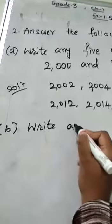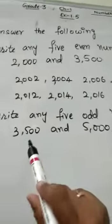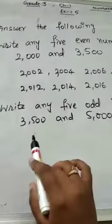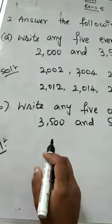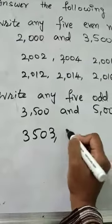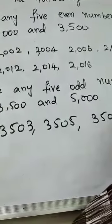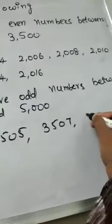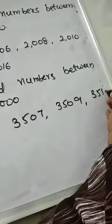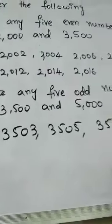The second question says: write any 5 odd numbers between 3500 and 5000. The odd numbers here are: 3503, 3505, 3507, 3509, 3511. These are the 5 odd numbers between 3500 and 5000.